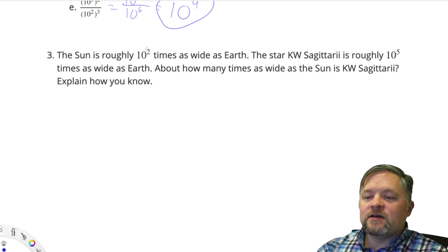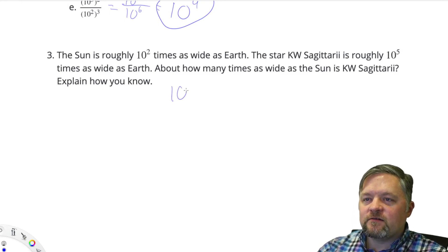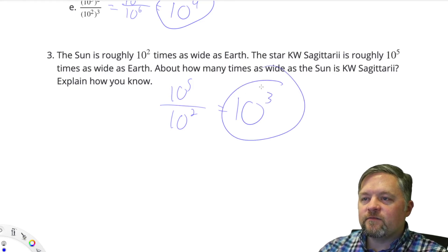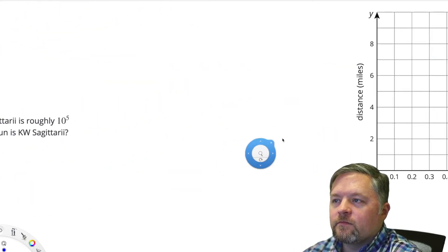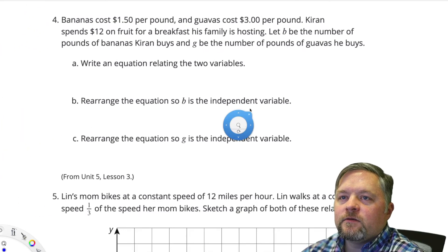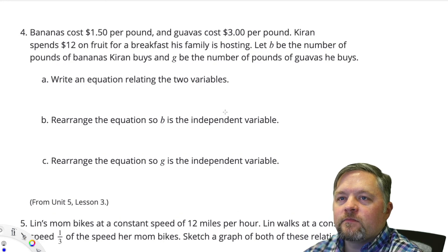So the sun is this many times as wide as Earth. Sagittarii is this many times as wide as Earth. If we want to compare the two of them, we just have to do 10 to the 5 divided by 10 squared. We are dividing, so we subtract the exponents. 5 subtract 2 is 3.